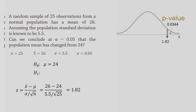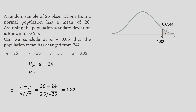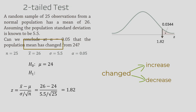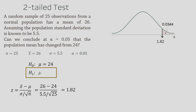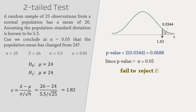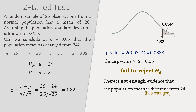Again, based on the same data, suppose we want to test if the true mean has changed from 24. This would be a two-tailed test because 'change' could denote either an increase or a decrease, so the alternative hypothesis would be that the population mean is not equal to 24. We multiply the one-tailed area by 2 to get the p-value, which in this case is greater than 0.05. That is, we fail to reject the null hypothesis and cannot conclude that the population mean is different from 24 at alpha equals 0.05.